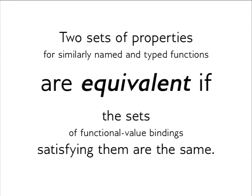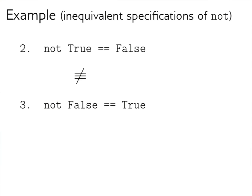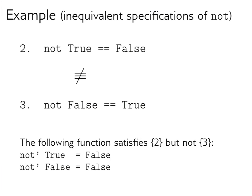Let's define equivalence. Two sets of properties for similarly named and typed functions are equivalent if the sets of functional value bindings satisfying them are the same. For example, here are two inequivalent specifications of `not`. This function — `not True = False` and `not False = False` — satisfies the first property but not the second, which is why they are different specifications.